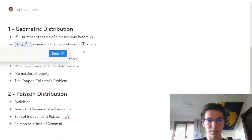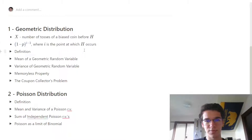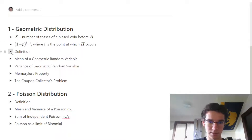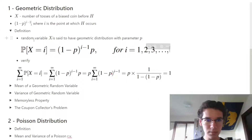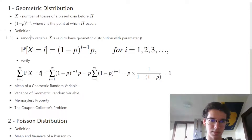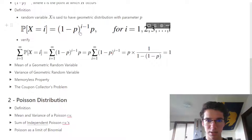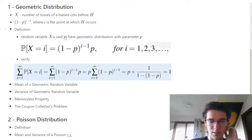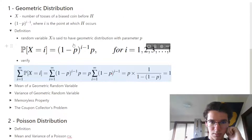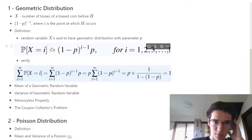Because if it takes us four trials before we hit heads, then we have to flip three tails — that's the probability of flipping three tails. So to define it: a random variable x is said to have a geometric distribution with parameter p. This is the probability mass function for this distribution.